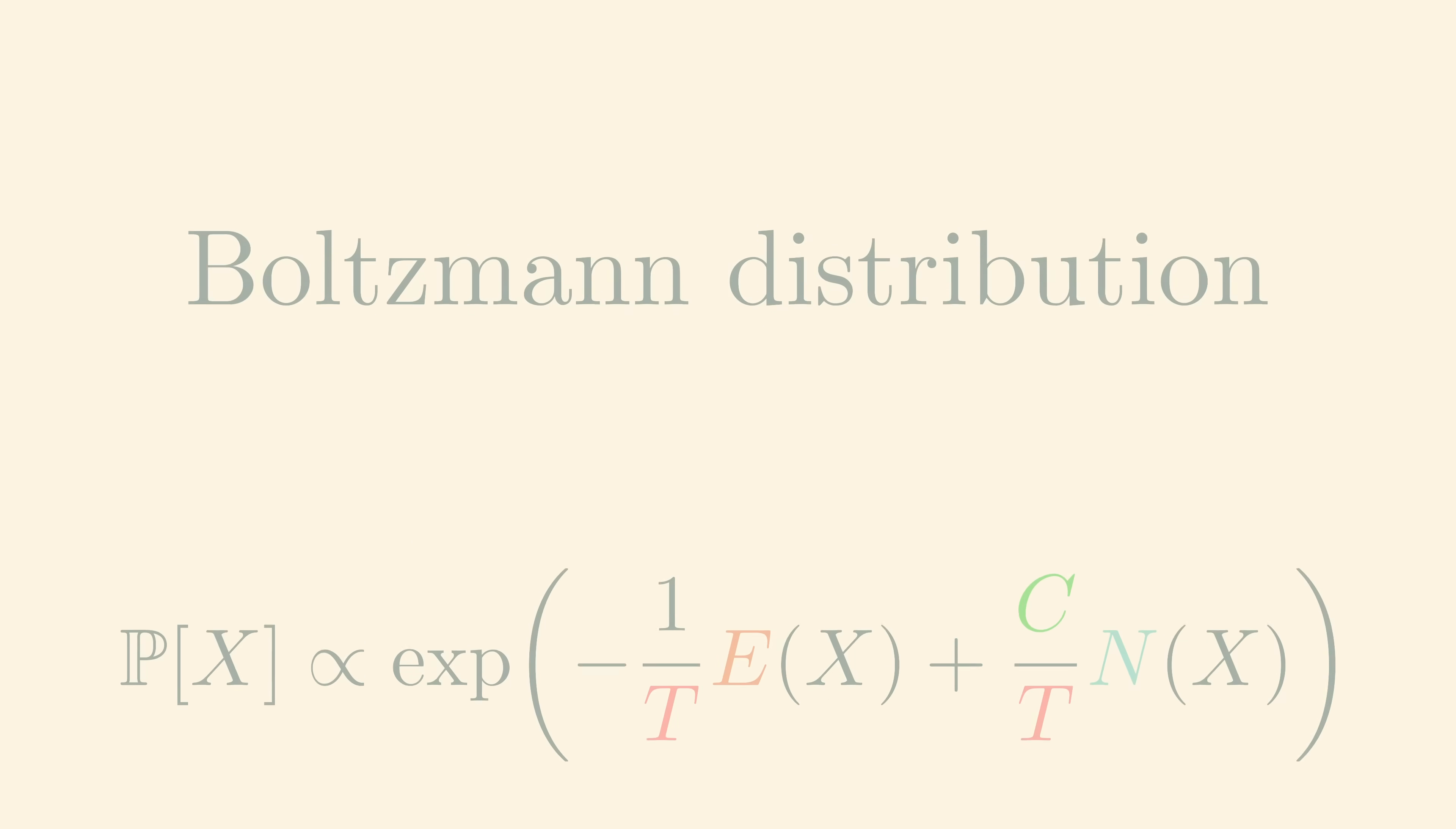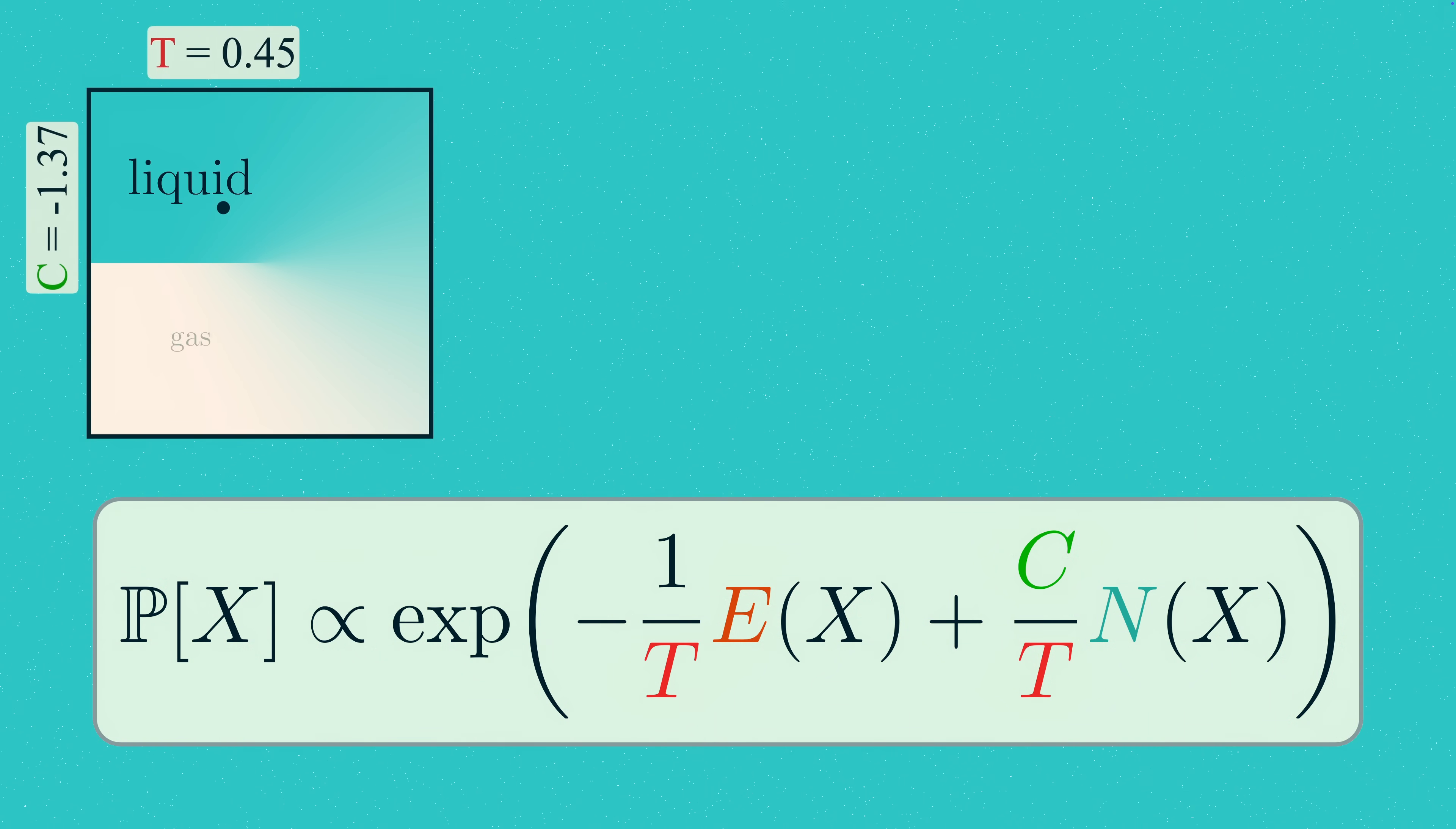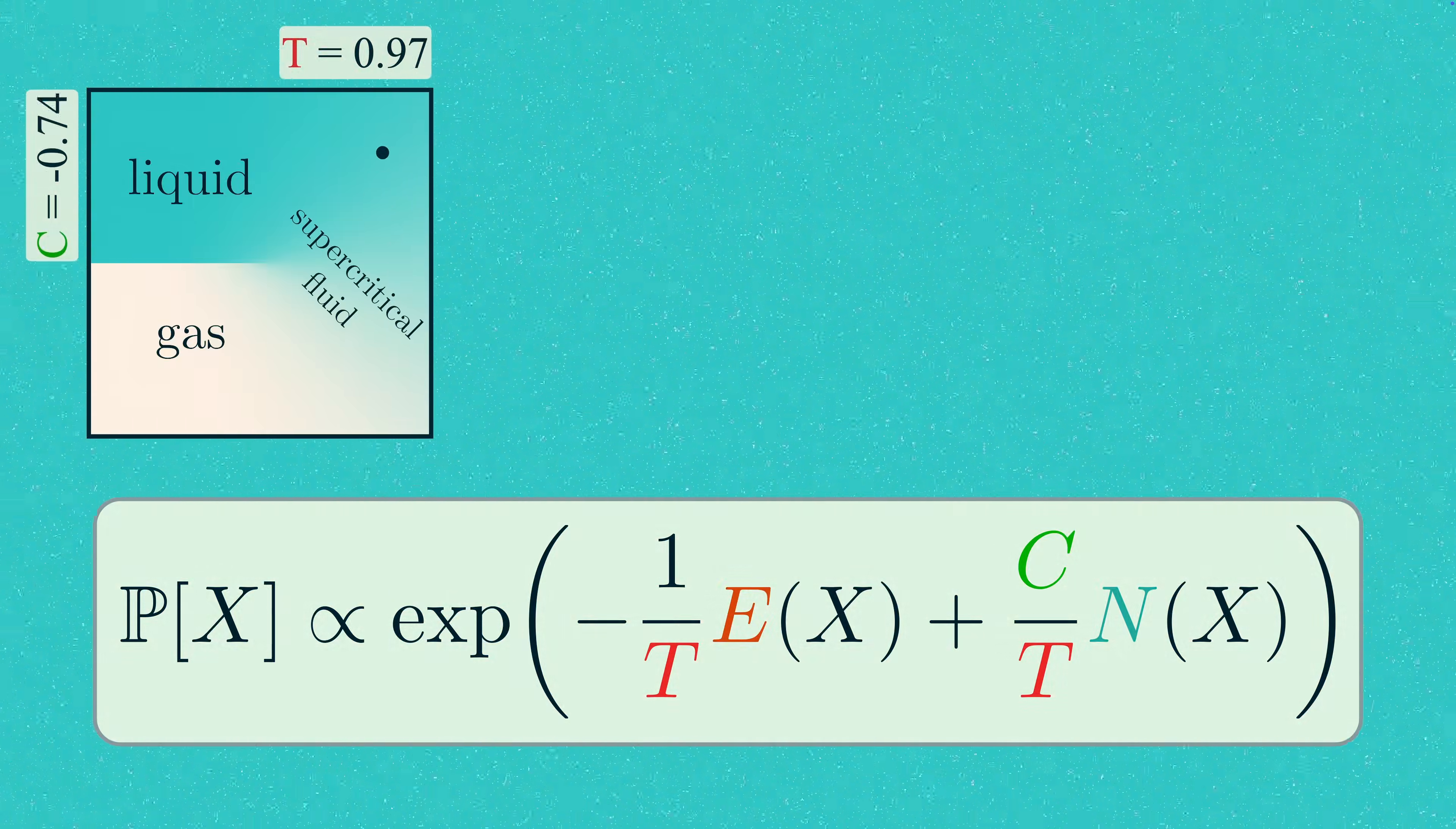Last time we introduced the Boltzmann distribution, which is the correct distribution of microstates at a fixed temperature and chemical potential. We used this to model a fluid with molecules living in a rectangular lattice of pixels, and saw how this led to a liquid phase and a gas phase with a phase transition between them. We also saw that at high enough temperatures, there's a phase of supercritical fluid which interpolates smoothly between liquid and gas with no sharp phase transition.